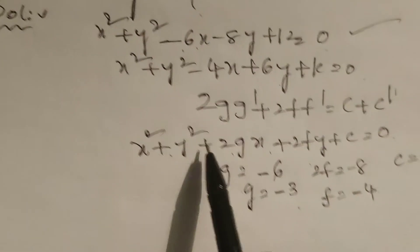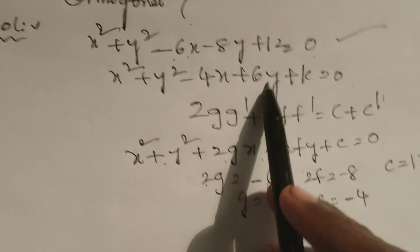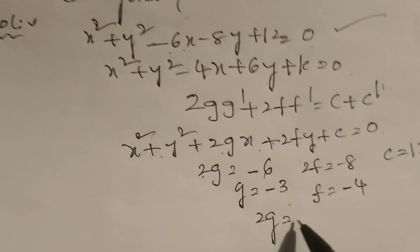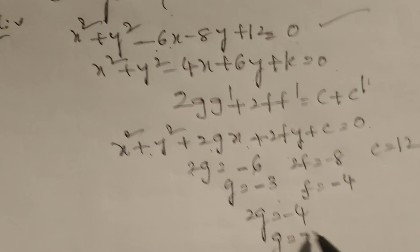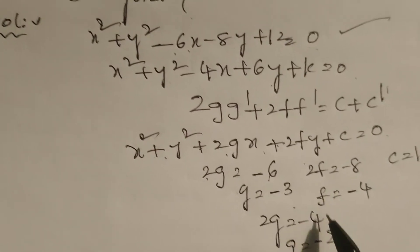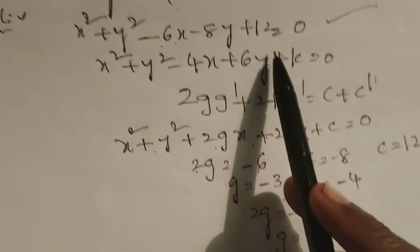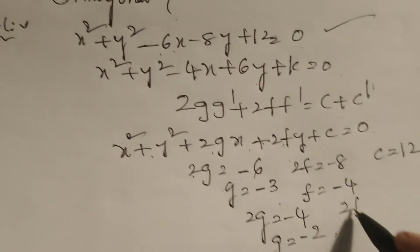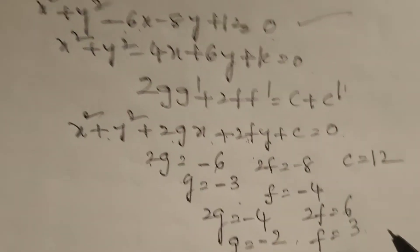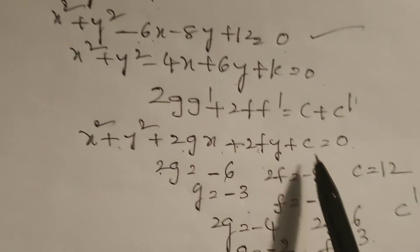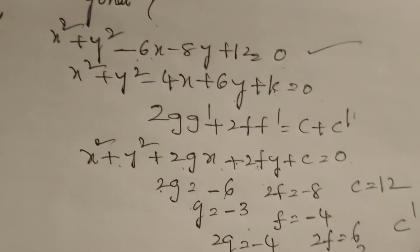Comparing the second circle equation with the standard form: 2g' = -4, so g' = -2. And 2f' = 6, so f' = 3. And c' = k.